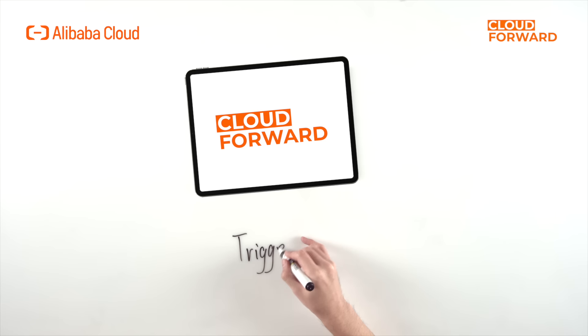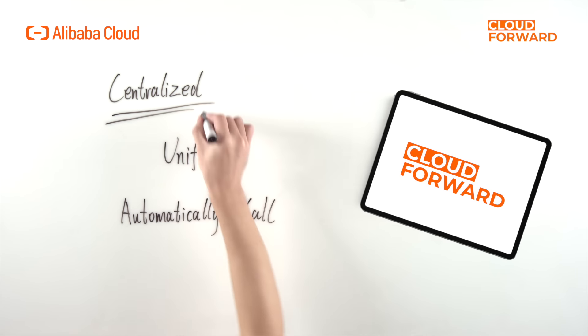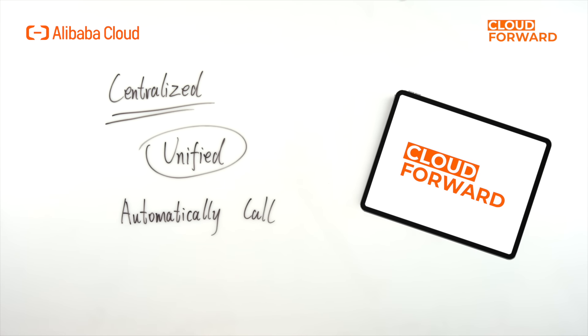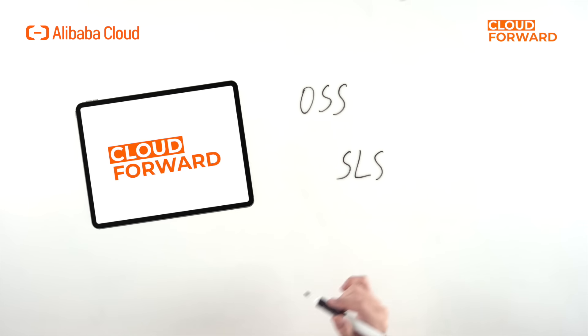Next, let's take a look at the concept of Trigger. In the event-driven computing model, the event source is the producer of the event, the function is the handler of the event, and the trigger provides a centralized and unified way to manage different event sources. When an event occurs, if it meets the rules defined by the trigger, the event source will automatically call the function corresponding to the trigger. Some typical use cases include processing objects uploading to OSS such as image processing, audio and video transcoding, and OSS zip package decompression, as well as cleaning, processing, and archiving logs in SLS, and triggering function execution at specified times.